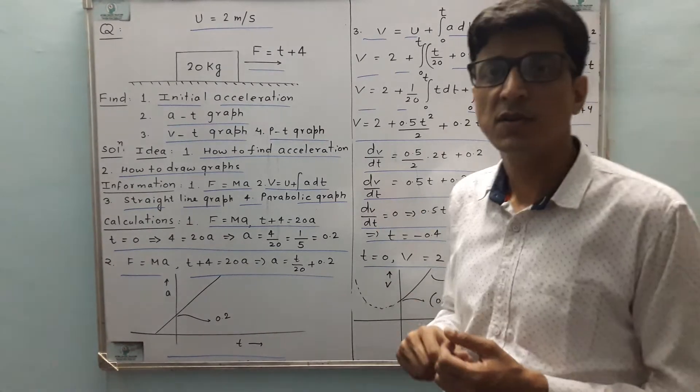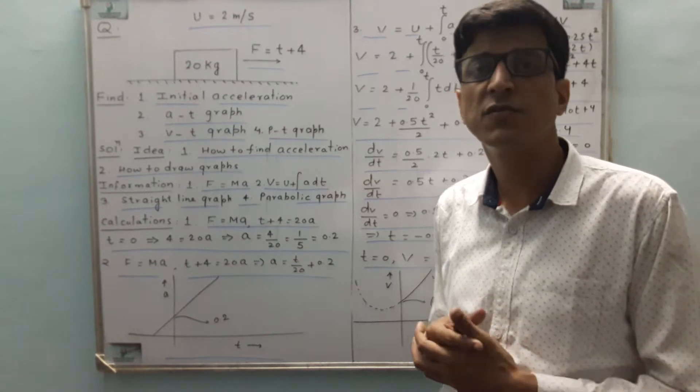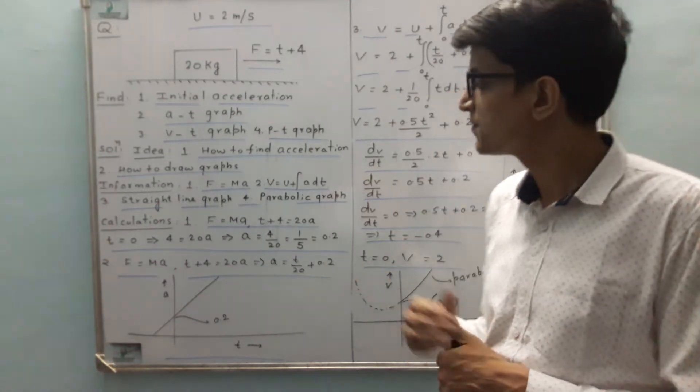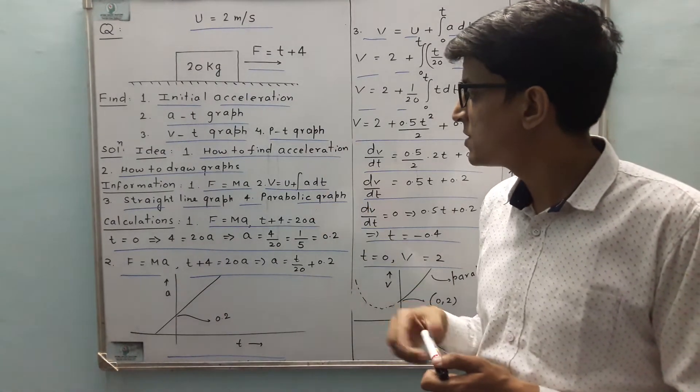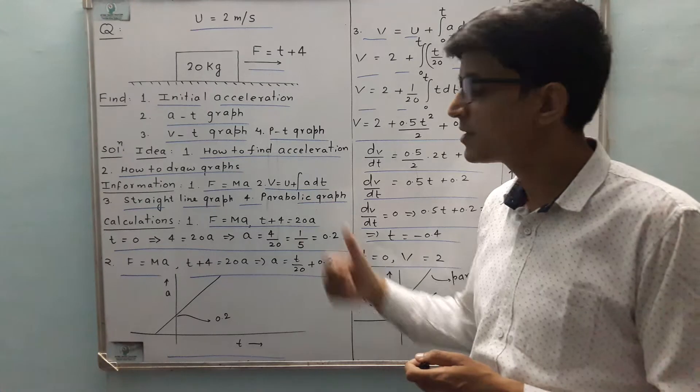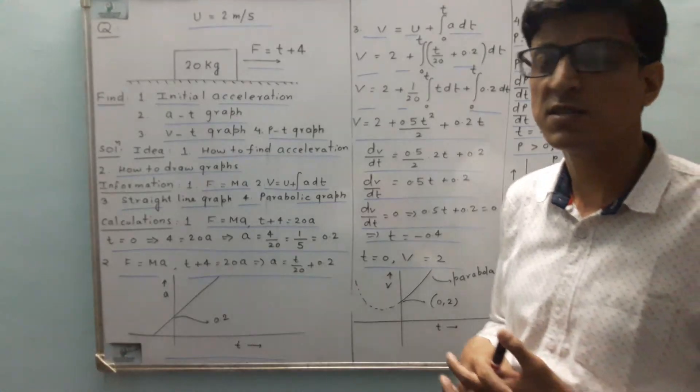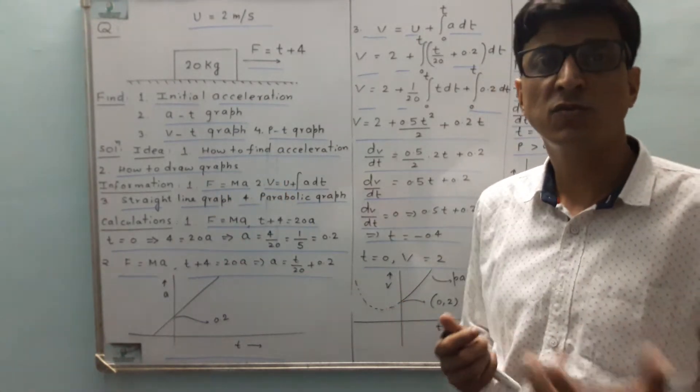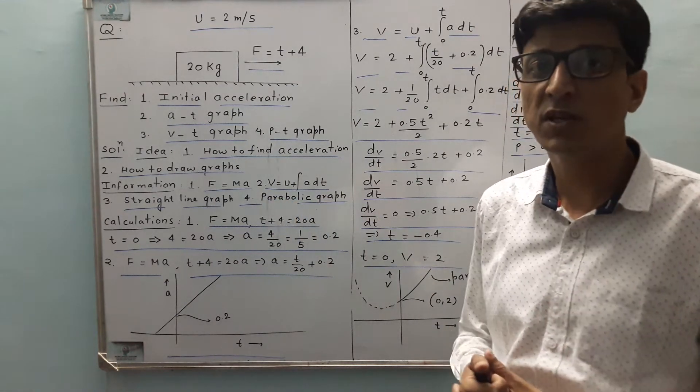Now let's talk about the information. We know that acceleration can be found from the force equation: Force equals ma, which is the second equation of motion for constant mass. Another thing is we need to find velocity. We know the relation from first equation of motion is u plus integration a dt for variable acceleration. Third is information about straight line graphs and parabolic graphs - we need to know how to draw them.